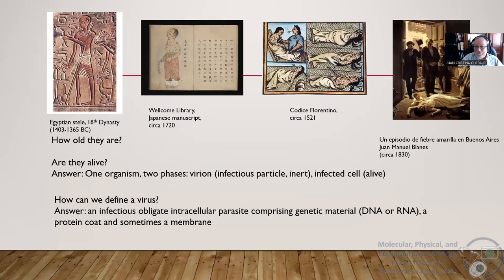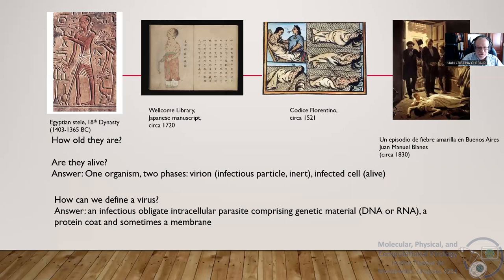Viruses have shaped the evolution of themselves and of the host in that relation. Are they alive? That is a question everybody asks me. It's a big discussion in the field. I think the right answer is that it's an organism but with two phases: when you have a particle it's in an inert form, but when the virus interacts with cellular receptors and enters the cell, the virus is alive — it hijacks all the machinery of the cell to make its own proteins.